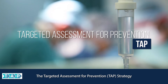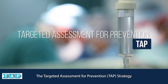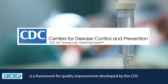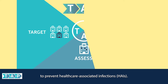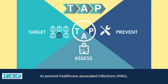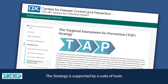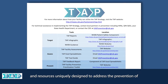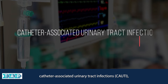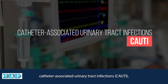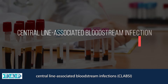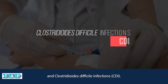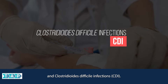The Targeted Assessment for Prevention, or TAP strategy, is a framework for quality improvement developed by the CDC to use data for action to prevent healthcare-associated infections, or HAIs. The strategy is supported by a suite of tools and resources uniquely designed to address the prevention of catheter-associated urinary tract infections (CAUTI), central-line-associated bloodstream infections (CLABSI), and Clostridioides difficile infections, or CDI.